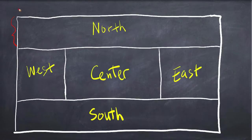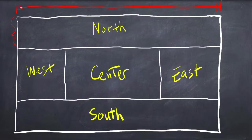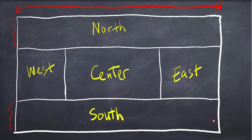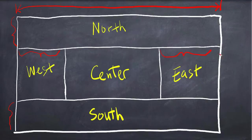The border layout will stretch the north component to fill the width of the container. This is also true for the south, where the component's preferred height is used and the south component is stretched to fill the width of the container. For the west and east regions, the preferred width is used, but those two components are stretched to fill the remaining height left over after subtracting the preferred size of the north and south.